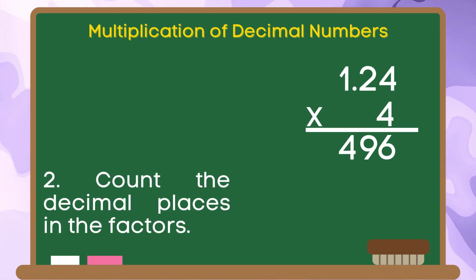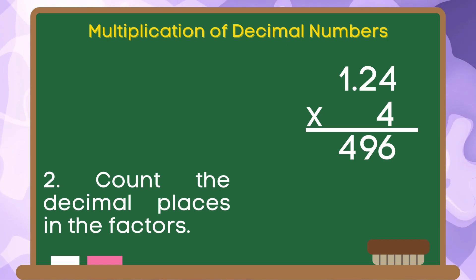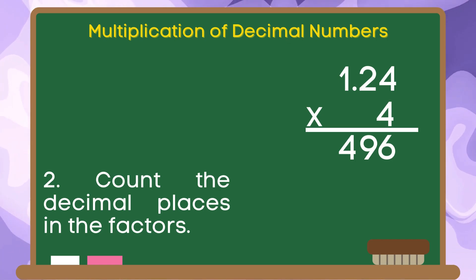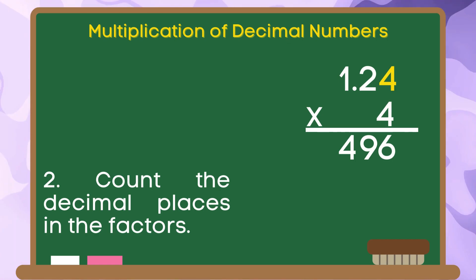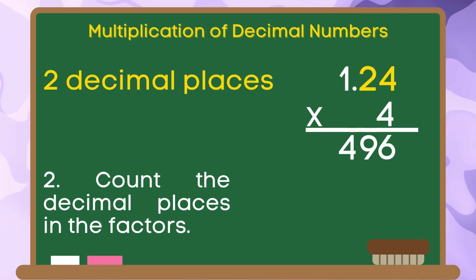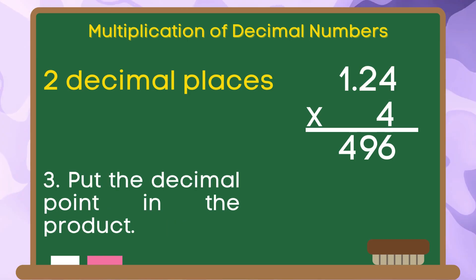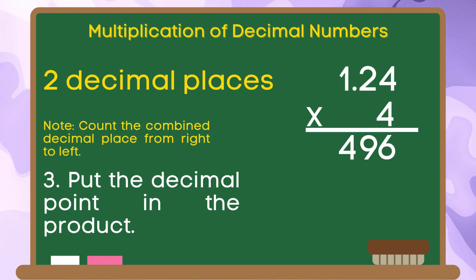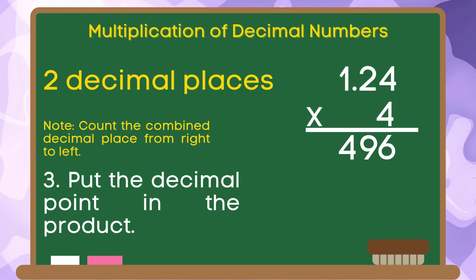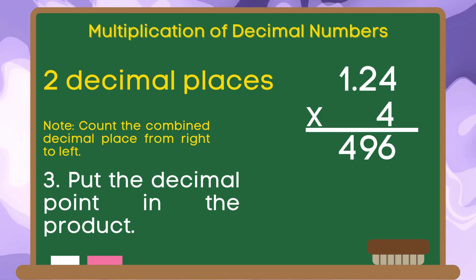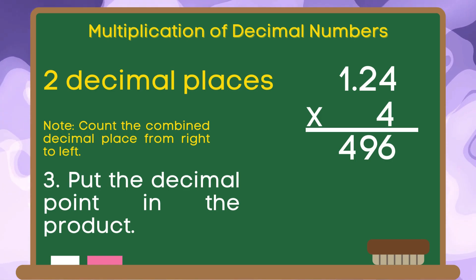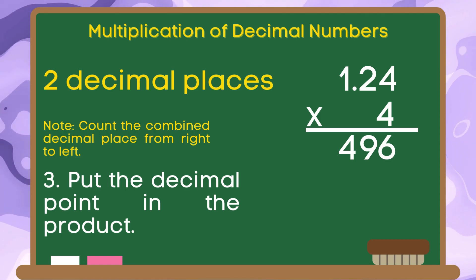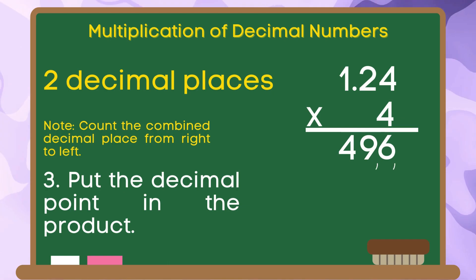For step 2, let us count the decimal places in the factors. 1, 2. In this example, we have 2 decimal places. For step 3, let us put the decimal point in the product. Since our given has 2 decimal places, we are going to move 2 decimal places in our product from right to left. 1, 2.